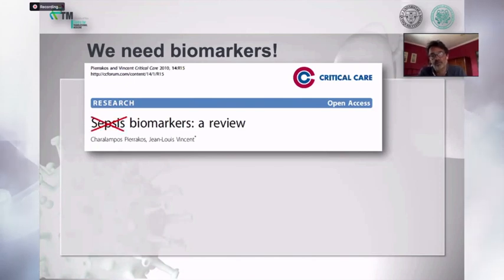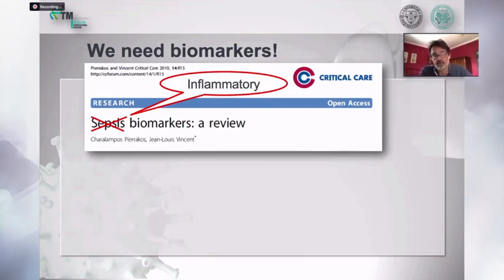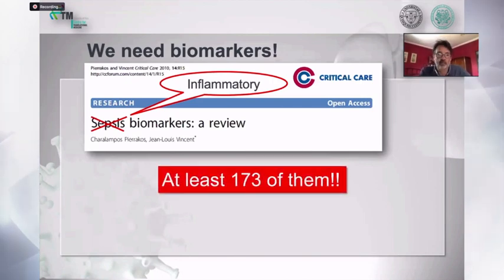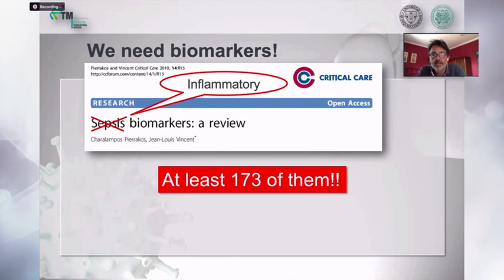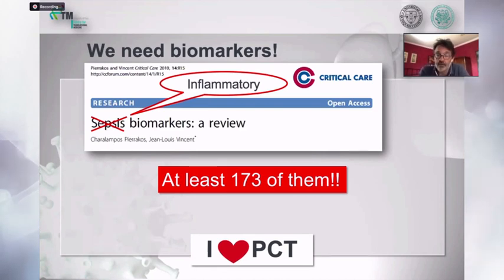Unfortunately these are called sepsis biomarkers, which is not really true — they should be called inflammatory biomarkers, because the same biomarkers can be released after trauma, major surgery, as well as after bacterial, viral, or fungal infections. There are more than 200 of them, as of a 2010 publication. Any biomarker may be useful. I have been using PCT for more than 22 years and have published several articles, which I will show towards the end of my presentation. However, regardless of whichever biomarker you use, applying and interpreting them at the bedside is not easy.